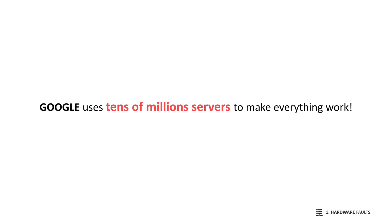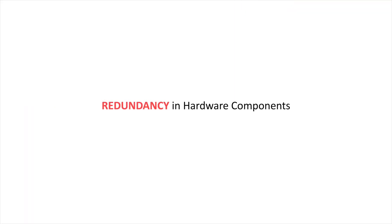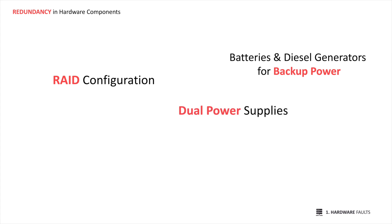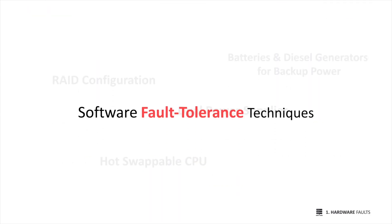Google uses up to tens of millions of servers to make everything work. So how do we cope with hardware faults? Our first response is usually to add redundancy to the individual hardware components in order to reduce the failure rate of the system. For instance, you can have RAID configuration for your disks, batteries and diesel generators for backup power, dual power supplies, and hot-swappable CPUs. This approach cannot completely prevent hardware faults from causing failures, but it definitely reduces the probability. However, as data volume has increased significantly, more applications have begun using larger numbers of machines, which proportionately increases the rate of hardware faults. Hence, the industry started using software fault-tolerant techniques in addition to hardware redundancy.